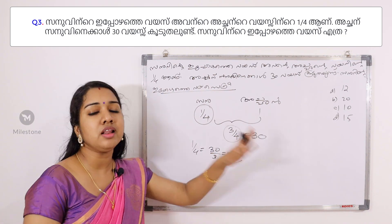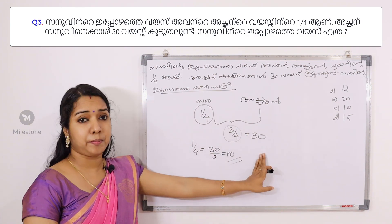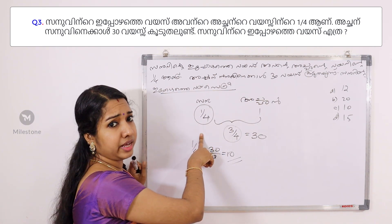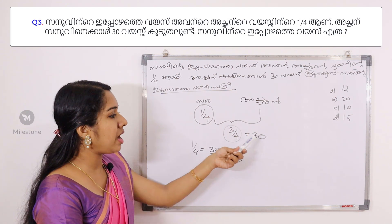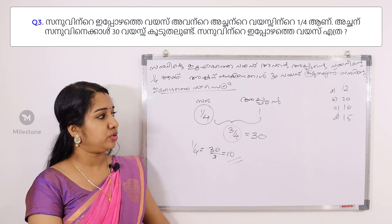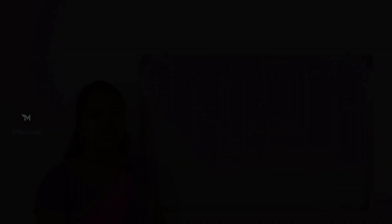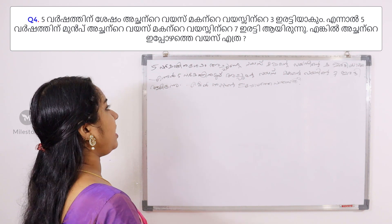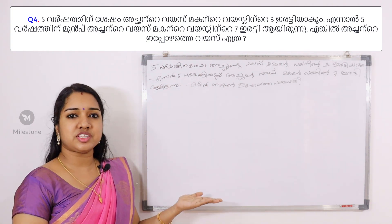We will answer these using the option method. 2 equals, which will consist of 1 by 4. Then, if you have 3 times, it's 3 times. We'll take this option method and do it.